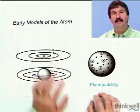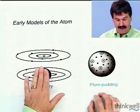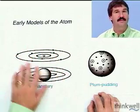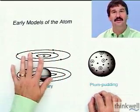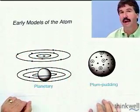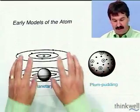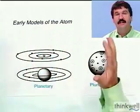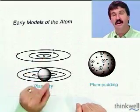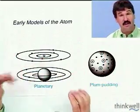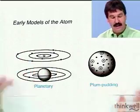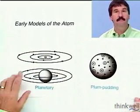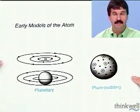Now the only problem with this model is that it turns out the electrons are not in orbit. We have to have a very different understanding of what those electrons are doing. Nonetheless, as far as the locations of the electrons, they're occupying a volume much, much larger than the volume of the nucleus. That certainly is true. And so that's the fundamental paradigm shift brought about by the Rutherford experiment.